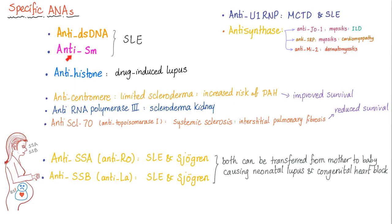Let's review. Anti-double-stranded DNA and anti-Smith: lupus. Anti-histone: drug-induced lupus. Centromere: limited scleroderma. Anti-RNA polymerase and anti-Scl-70: progressive systemic sclerosis. SSA and SSB: SLE and Sjogren. U1-RNP: mixed connective tissue disease and lupus. Anti-synthetase: anti-Jo-1 is myositis — dermatomyositis or polymyositis — associated with interstitial lung disease. Anti-SRP: myositis and cardiomyopathy. Anti-MI2: dermatomyositis with good prognosis.